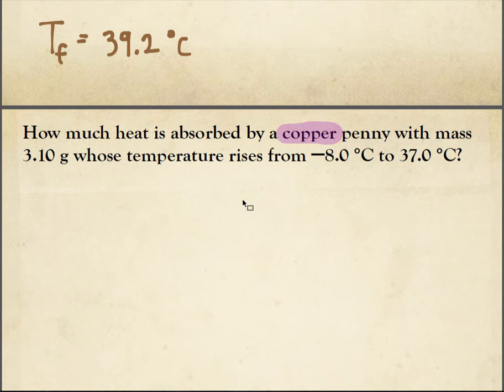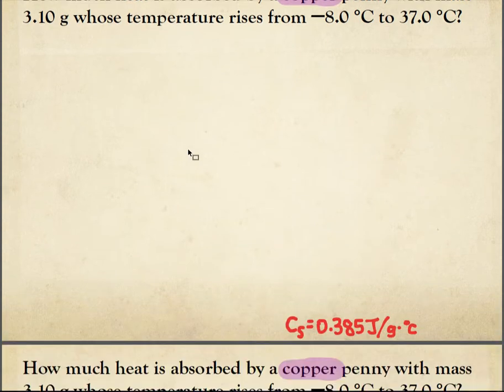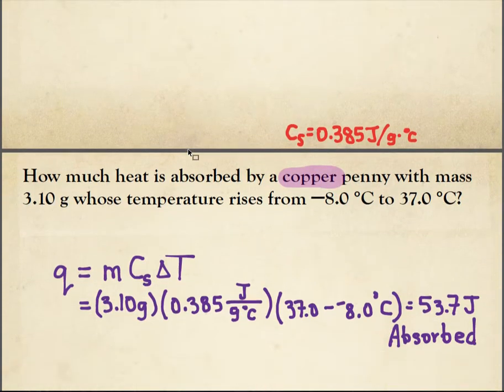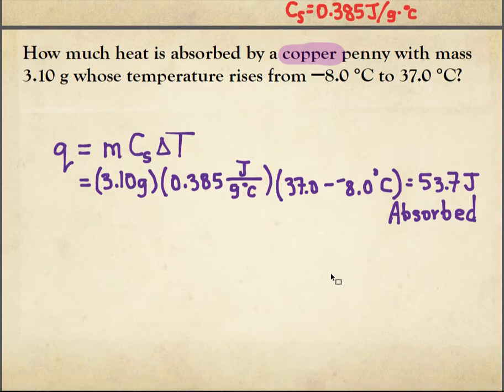How much heat is absorbed by a copper penny whose temperature raises from negative 8 Celsius, so it's in a cold freezer, up to 37 Celsius, which is a little bit warmer than room temperature. And, I must say, this is a fairly simple one. I just used that heat equation. The mass of the penny, specific heat of the copper, and the change in temperature. Looks like 45 degrees Celsius-ish, times 0.385 times 3.1. If I'm not mistaken, that energy is absorbed by the cold penny because it warms up.